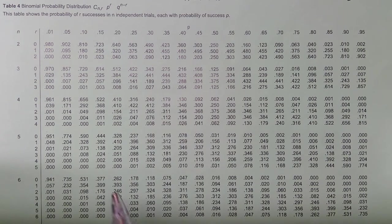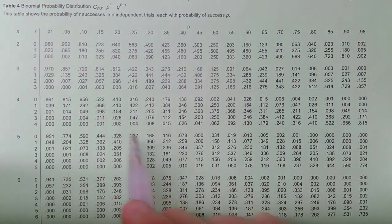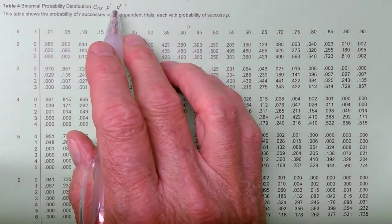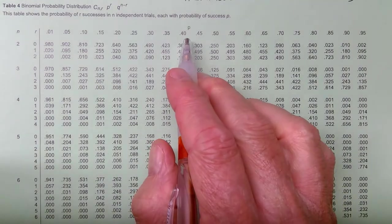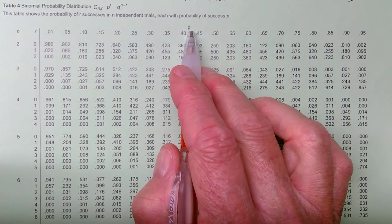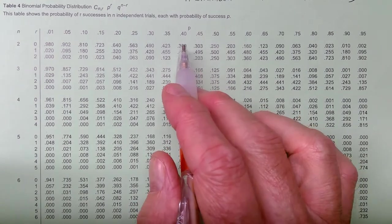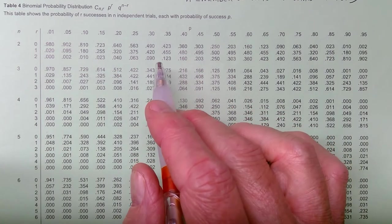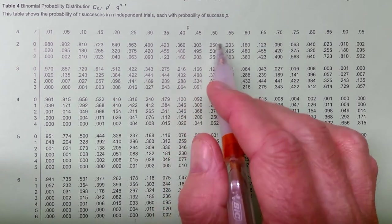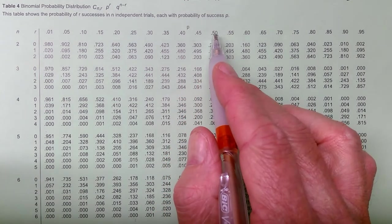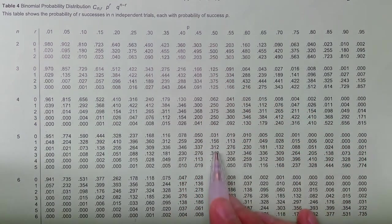Dr. Cruz here. Let's look at the binomial probability distribution table. All of these numbers in the table were calculated using a formula I'll show you later. First, P is the probability of success — the probability of a single success. For example, if I'm flipping a coin and trying to get heads, the probability that I flip one coin and get heads is 50%. To look up the probability of a 50% coin flip, I would stay in this column right here.